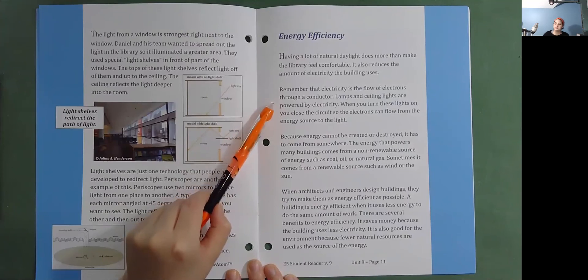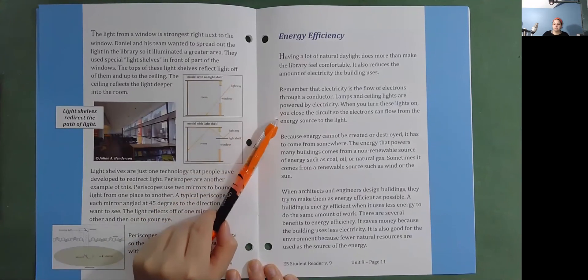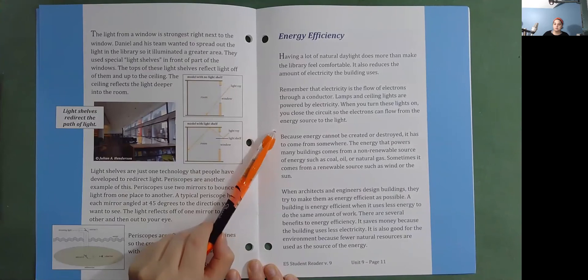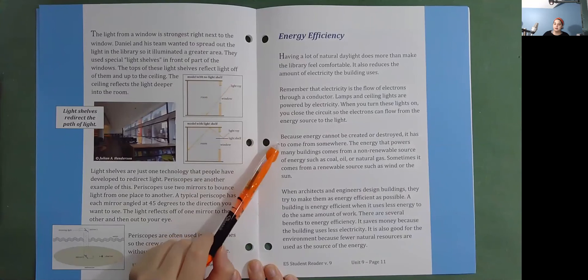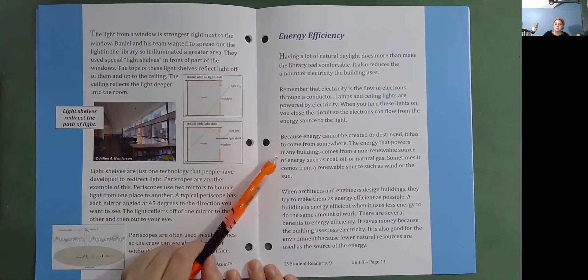When you turn these lights on, you close the circuit so the electrons can flow from the energy source to the light. Because energy cannot be created or destroyed, it has to come from somewhere. The energy that powers many buildings comes from a non-renewable source of energy such as coal, oil, or natural gas. Sometimes it comes from a renewable source such as wind or the sun.